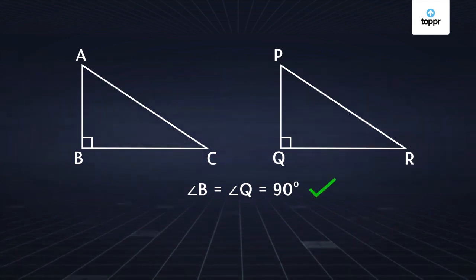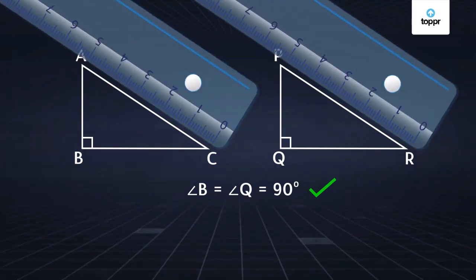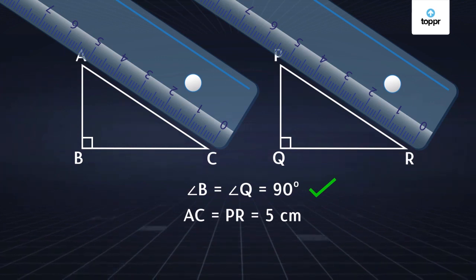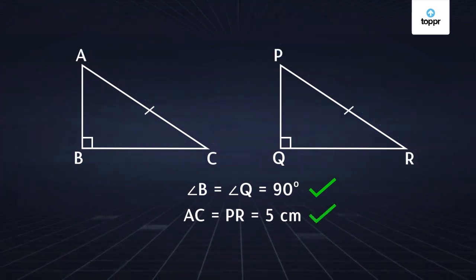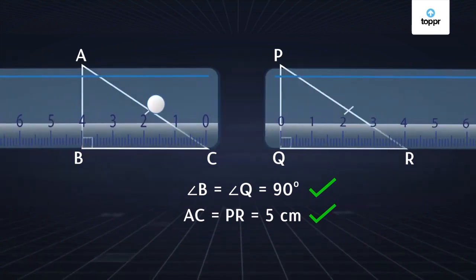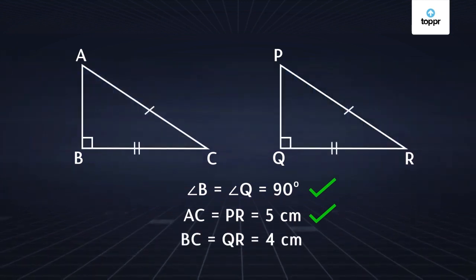Since hypotenuses AC and PR are both equal to 5 centimeters, the second condition is also satisfied. And finally we check if any other pair of corresponding sides are equal in length. Since the length of side BC is equal to the length of side QR, the third condition is also satisfied.